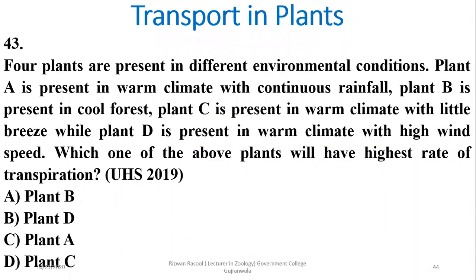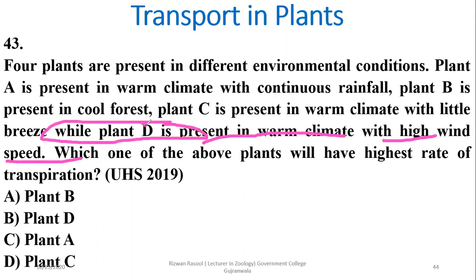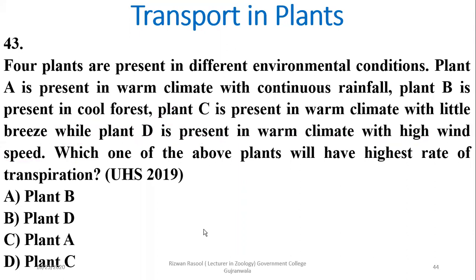Question 43: Four plants are in different conditions and we estimate which has the highest rate of transpiration. The plant kept in a warm climate with high wind — as both factors promote transpiration — will show the highest rate. Plant D will show maximum transpiration; beta is the right option.